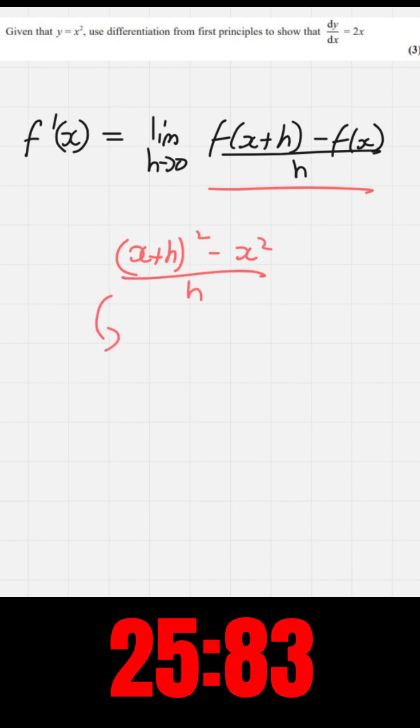This then simplifies to x squared plus 2xh plus h through binomial transformation minus x squared over h.